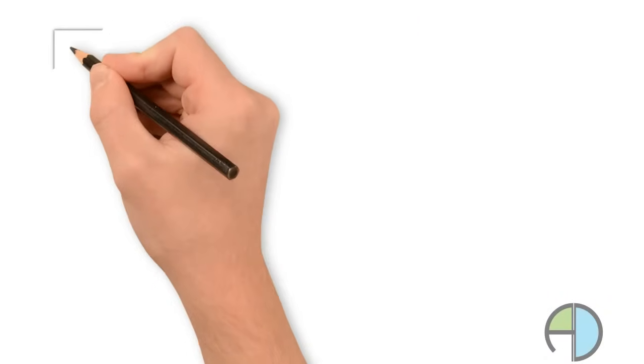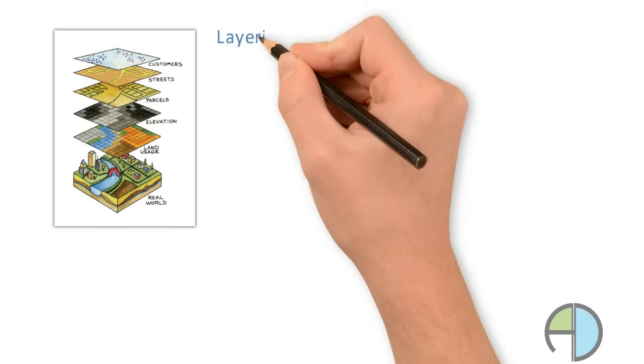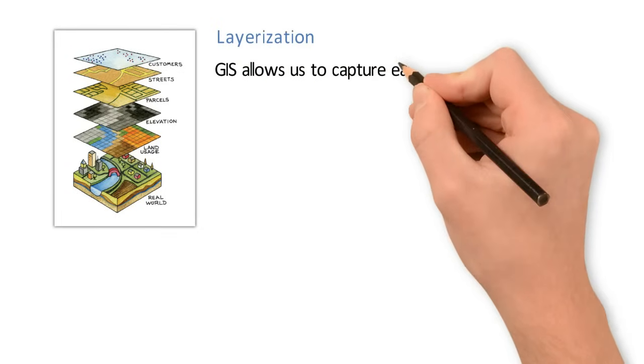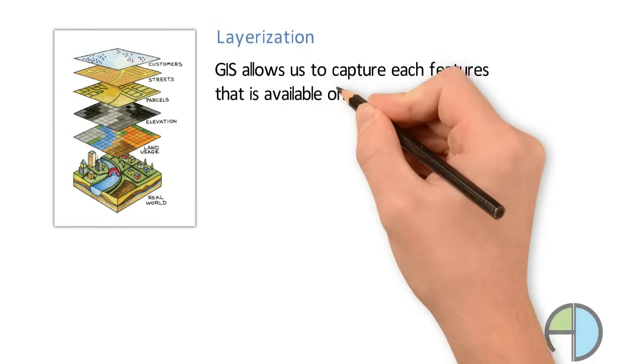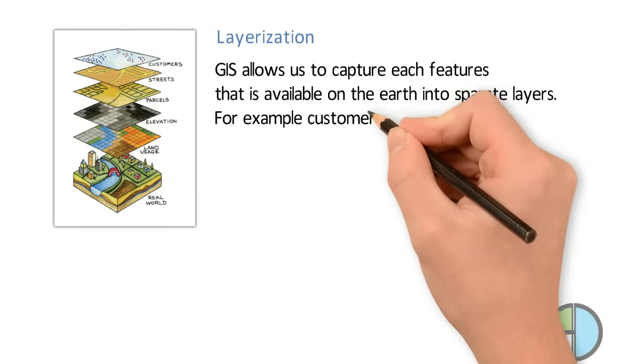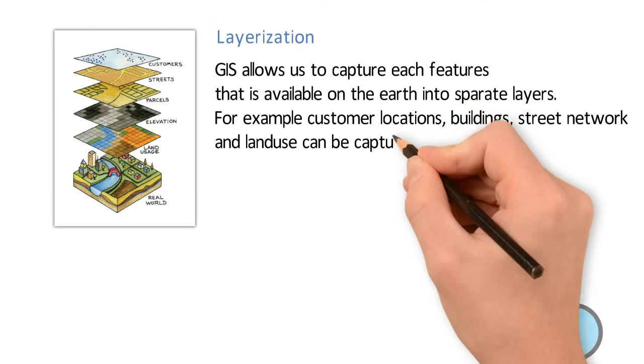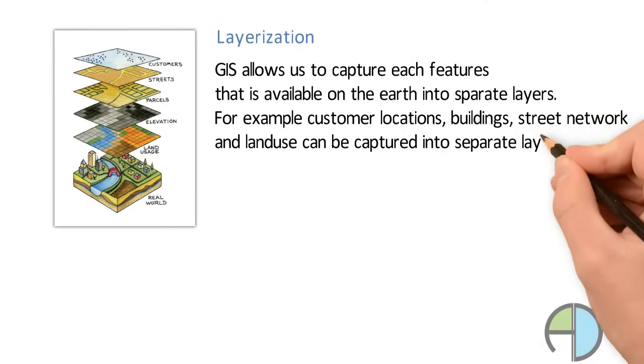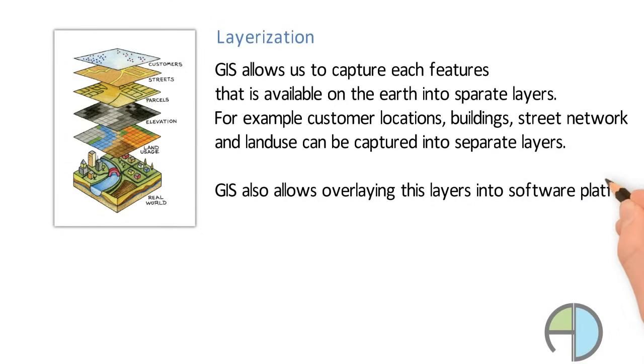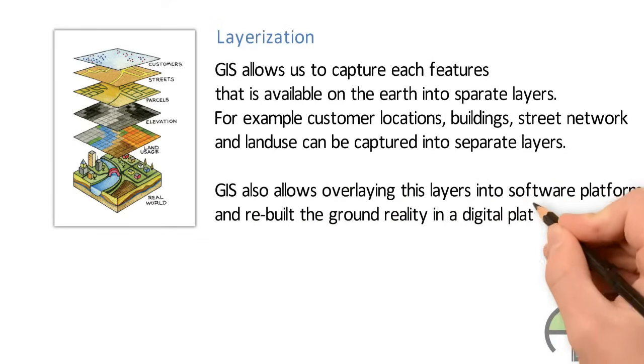The basic building block of a GIS system is layer. Layer is nothing but logical grouping of similar objects. GIS system allows us to capture each feature that is available on the earth into separate layers. For example, customers can be combined into separate layers. Same way buildings, streets and land use can be captured into separate layers. Ultimately, GIS system will allow us to display all these layers on top of each other and then we will be able to rebuild the ground reality in digital platform.